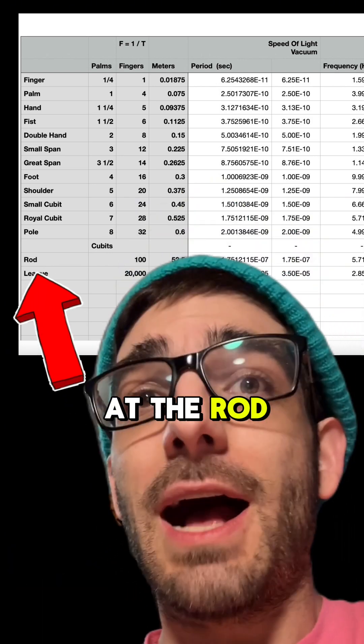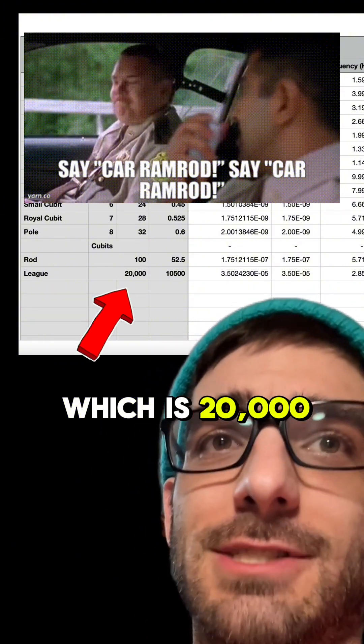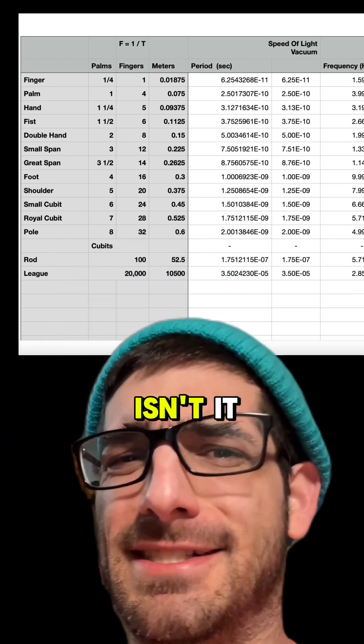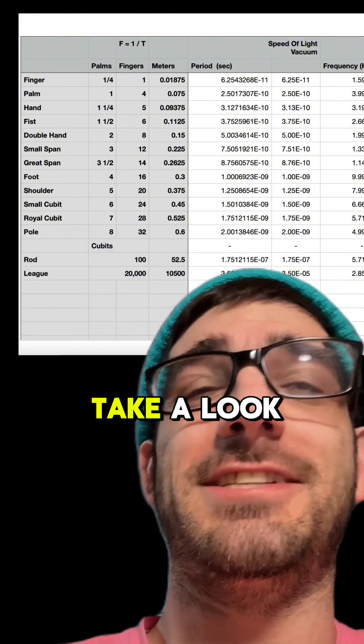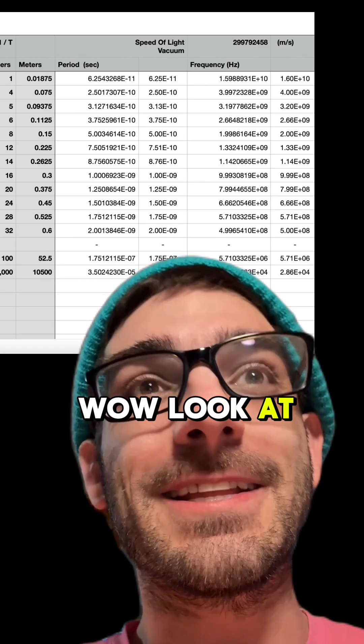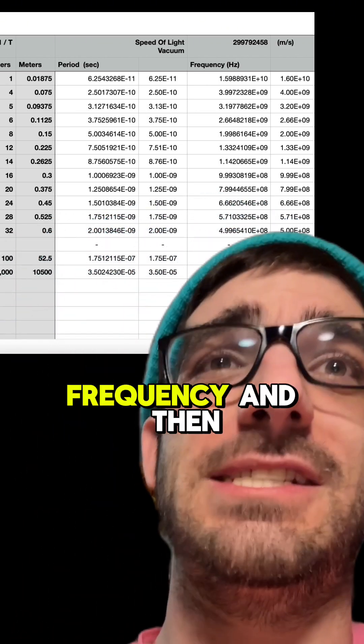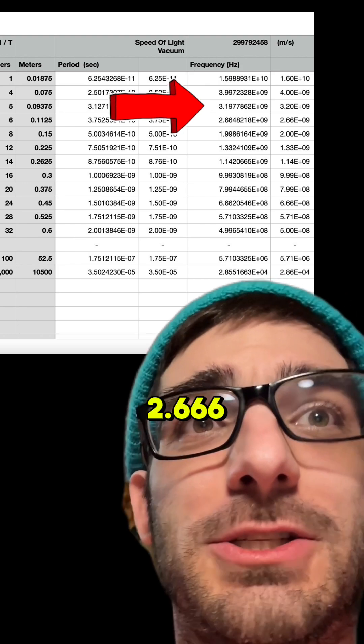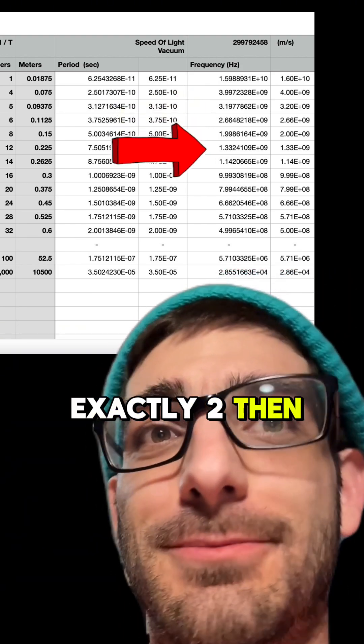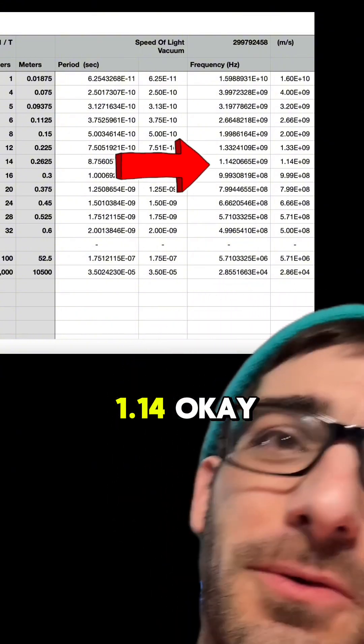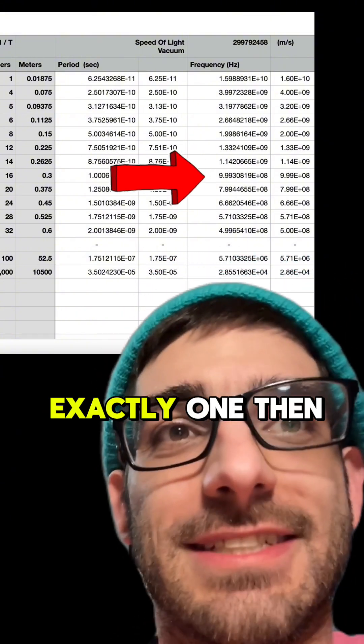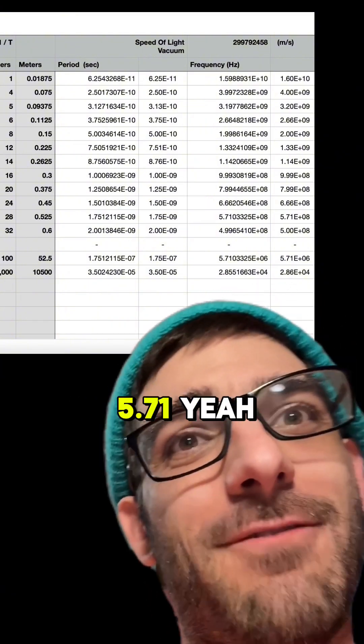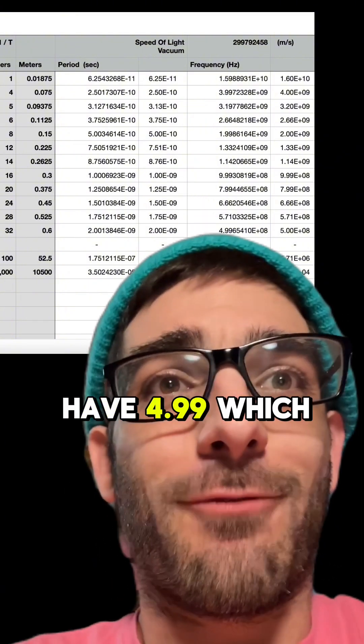If we even go a little bit further, we're going to look at the rod, which is 100 cubits. And then the lead, which is 20,000 cubits. We got 1.75 and 3.5. See this trend here? That's pretty odd. What a coincidence. But that gets even cooler, because if you take a look at the frequency for each of these, and now it's just slightly off. You've got 1.6, then 4.0, then 3.2, then 2.666, then it's almost exactly 2, then 1.33, and then 1.14, then 9.99 which is almost exactly 1, then 7.99 which is almost exactly 8, then 6.666, then 5.71, and then 4.99 which comes to 5.